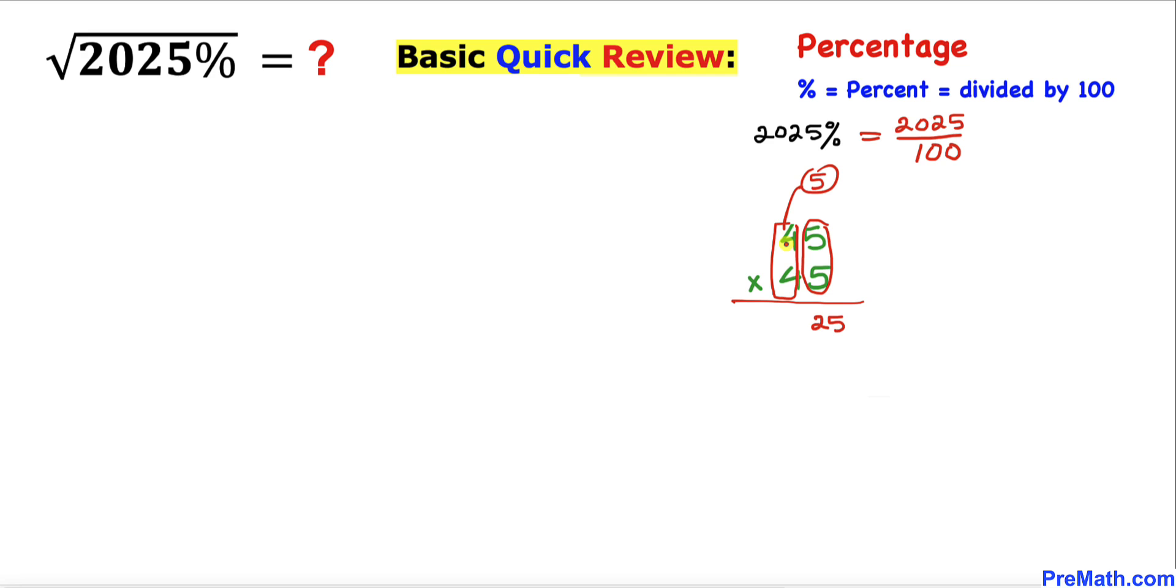What comes after 4 is 5. Now we multiply 5 times this number 4, which is 20. So we get 2025.